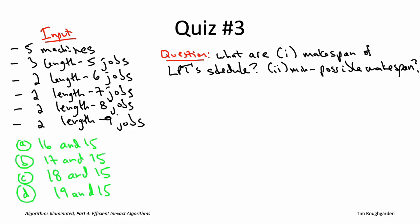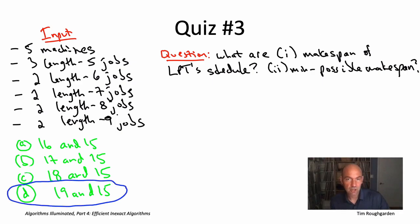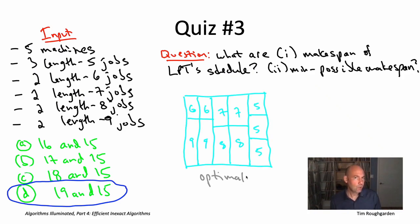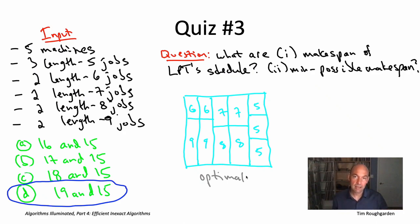The correct answer is D. Let's answer the questions in reverse order. For the minimum possible schedule of these 11 jobs, the best case is perfectly balanced. Indeed there exists a schedule making all machine loads exactly 15: pair the sixes with the nines, the sevens with the eights, and give the three length-five jobs dedicated machines.